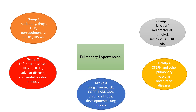Group 3 includes pulmonary hypertension from lung disease and hypoxia, such as interstitial lung disease, chronic obstructive pulmonary disease, LAM, obstructive sleep apnea, alveolar hypoventilation disorders, and chronic exposure to altitude. Group 4 is chronic thromboembolic pulmonary hypertension and other pulmonary artery obstructive disorders such as tumors, parasites, and arthritis.